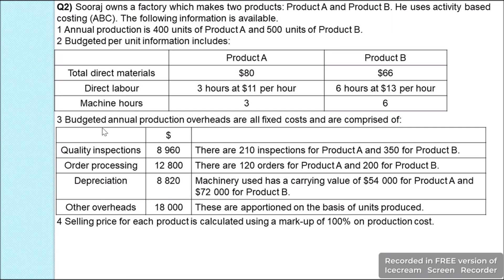Budgeted annual production overheads are all fixed and consist of: quality inspection $8,960 — with 210 inspections for product A and 350 for product B; order processing $12,800 — with 1,200 orders for product A and 200 for product B; depreciation $8,820 — machinery carrying value $54,000 for product A and $72,000 for product B; other overheads $18,000, apportioned on the basis of units produced.